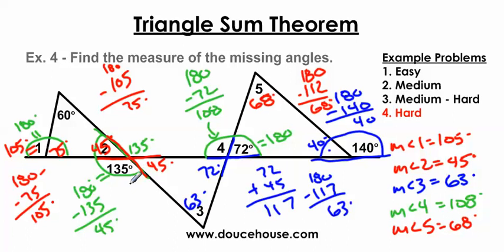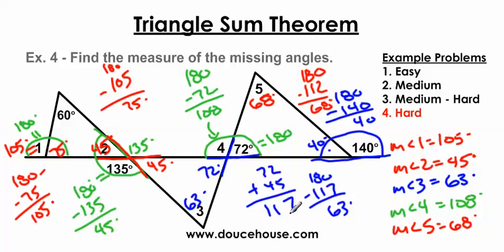It got kind of messy, but keep in mind we had three triangles, all needing to equal 180 degrees. We used vertical angles a couple of times and linear pairs several times — that's the trick to this problem. Remember: linear pairs, vertical angles, and a triangle's angles must equal 180 degrees, and you can work your way through. Hopefully this helps you out. Have a good day, bye bye.